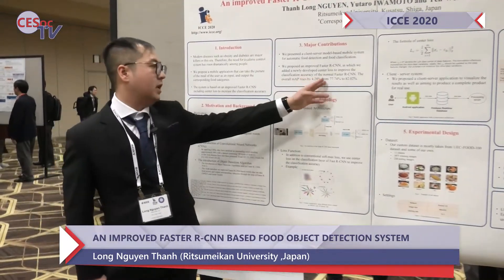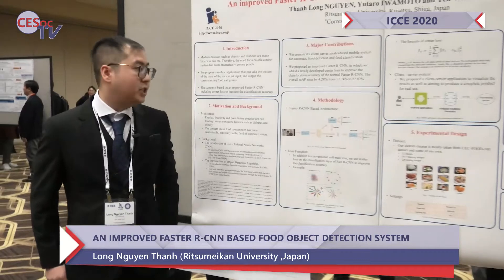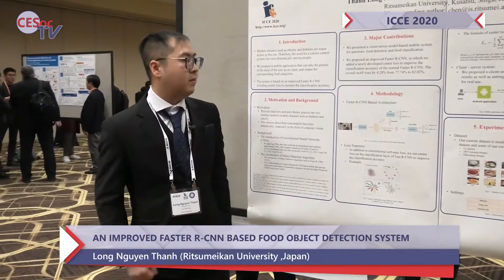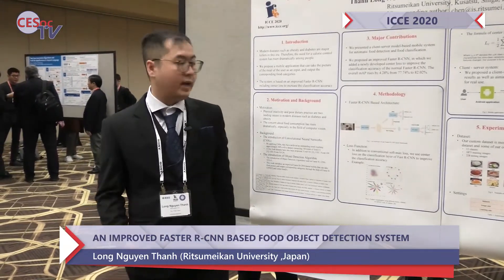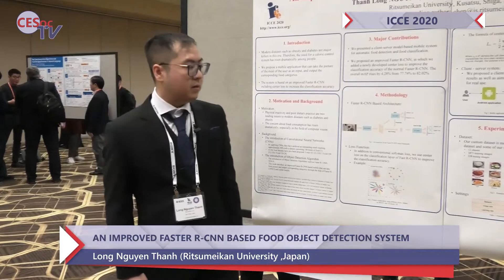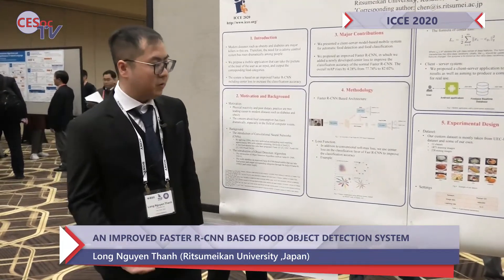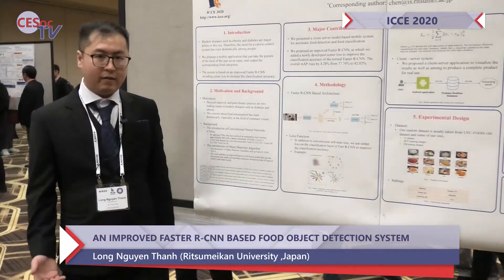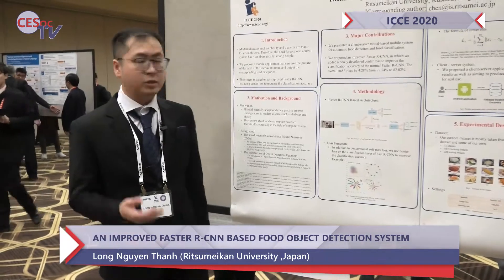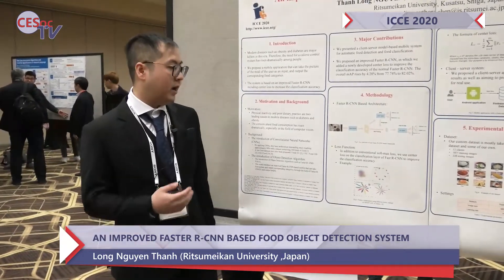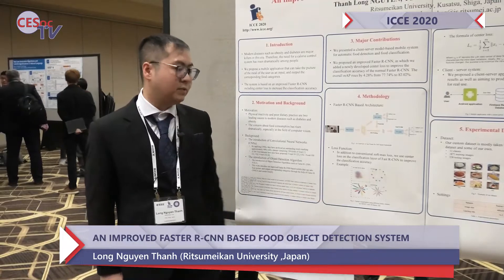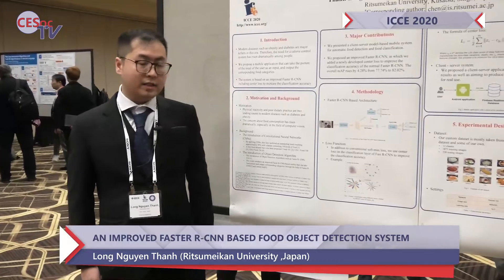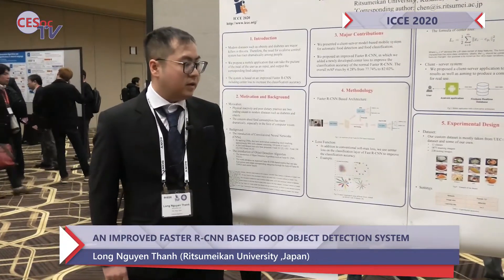My model increases the mean average accuracy for all classes by 4.28 percent, from 77.74 percent to 82.02 percent. My experiment contains 12 classes, 1,920 training images, and 200 testing images across 12 classes of Japanese food. I use ResNet-101 as the base architecture.